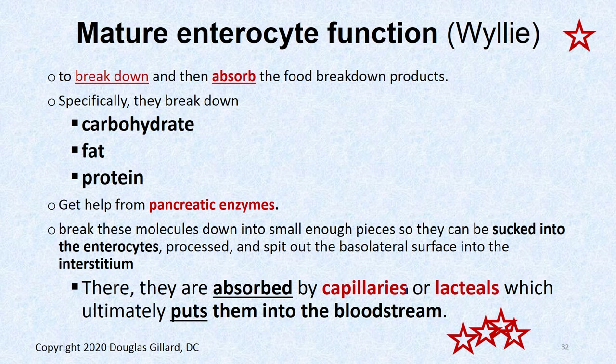Mature enterocytes stop secreting water and instead break down and absorb nutrients — carbohydrates, fats, and proteins — with help from pancreatic enzymes. Their job is to break down carbohydrates into tiny pieces so they can be reabsorbed inside the enterocytes. The enterocytes take in pieces of different types of food that have already been broken down, then release them out the basolateral surface into the interstitium. Fats go into lacteals, while amino acids and glucose are taken up by capillaries and go into the bloodstream.